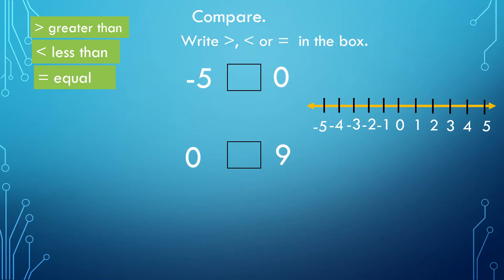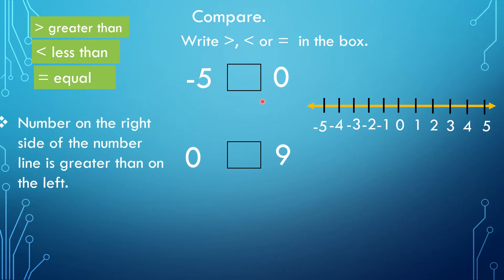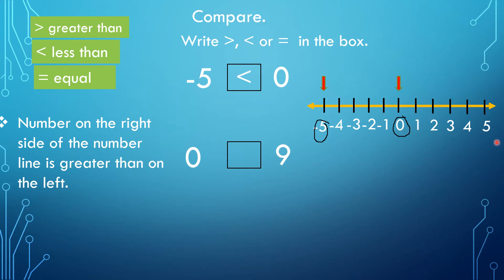Next, we have negative 5 and 0. The number on the right side of the number line is greater than on the left side. Zero is here, and negative 5 is here — negative 5 is on the left. Therefore, negative 5 is less than 0. Next, we have 0 and positive 9. Positive 9 is on the right of 0, therefore 0 is less than 9.